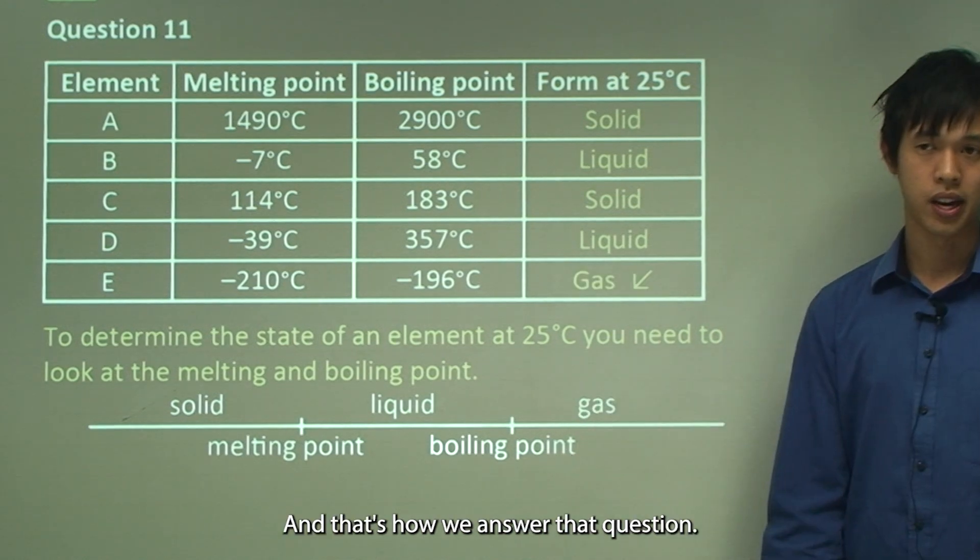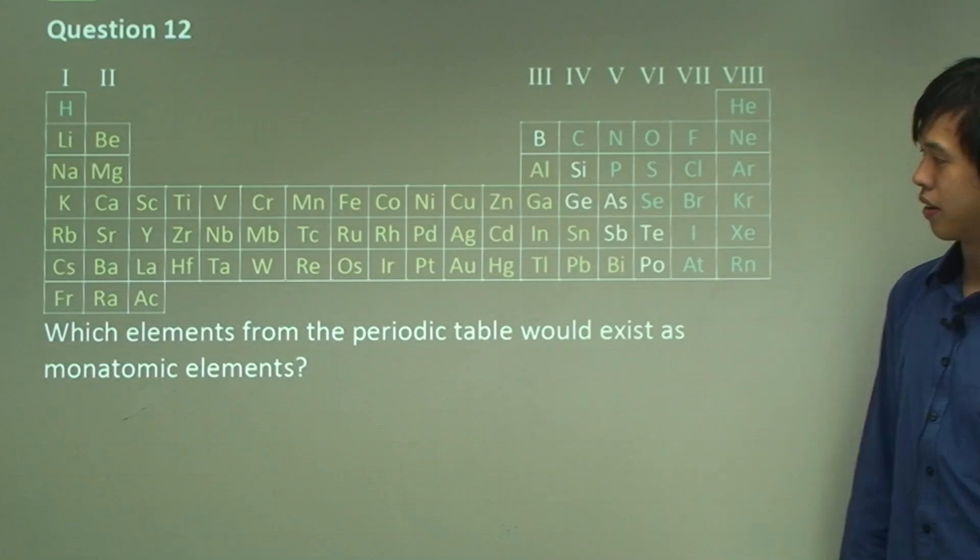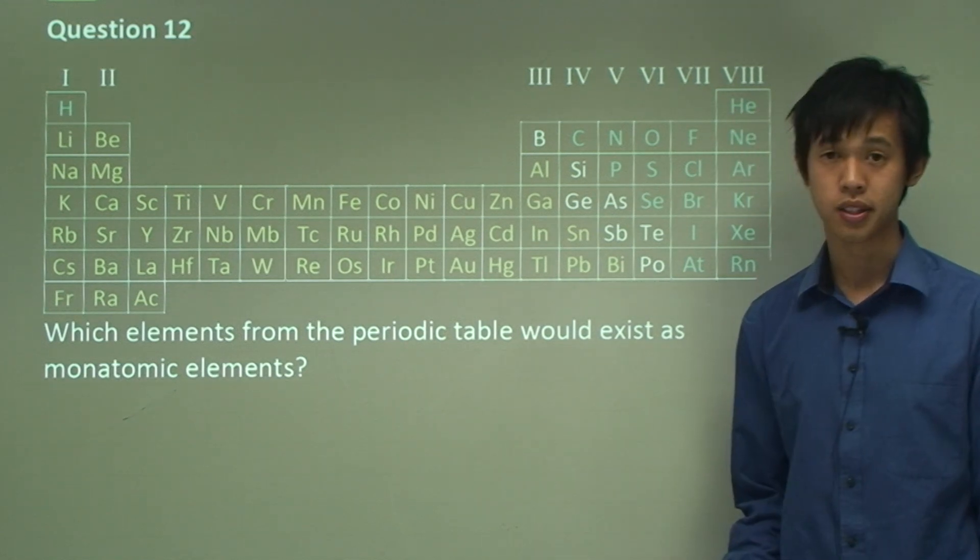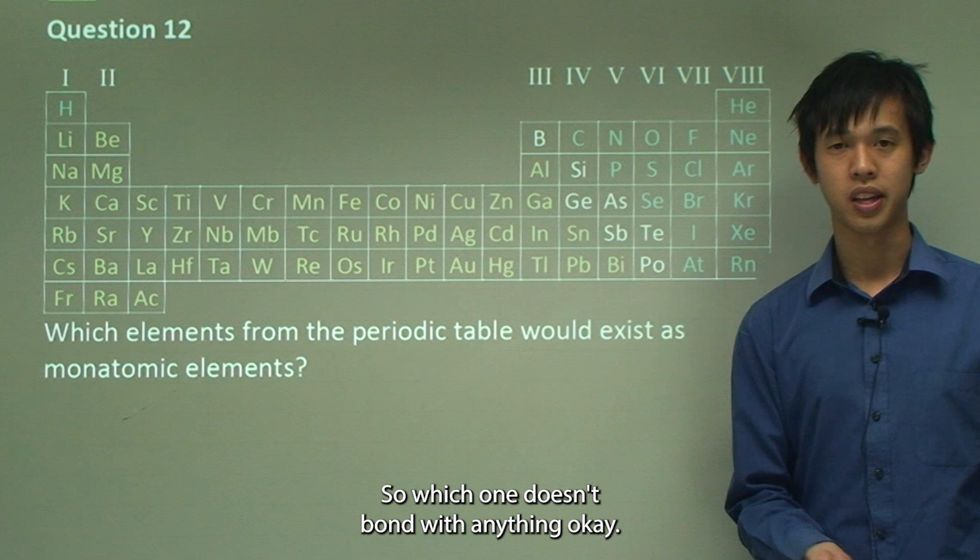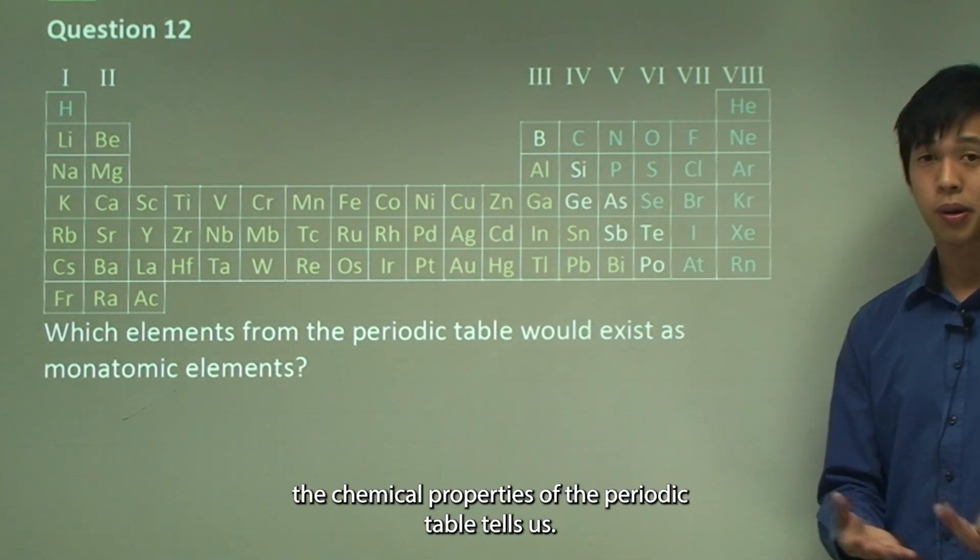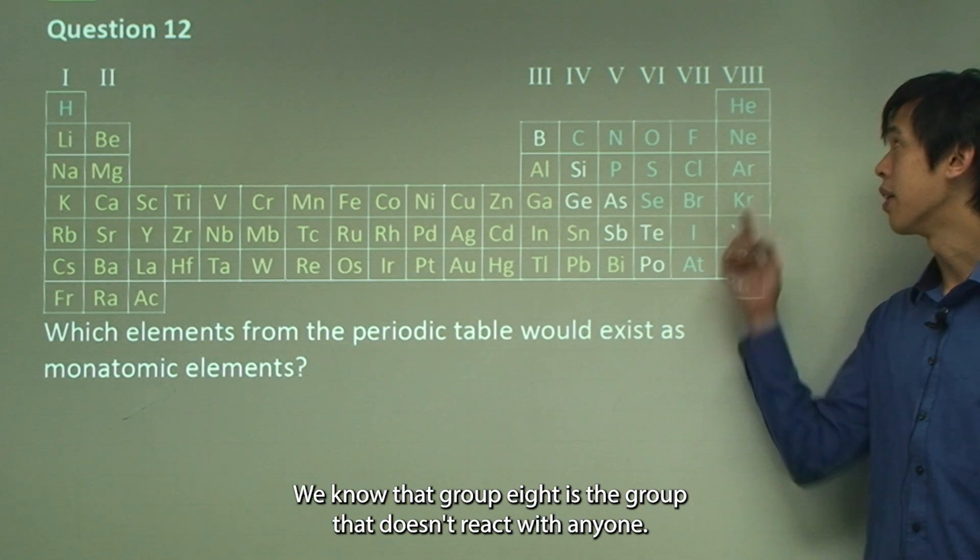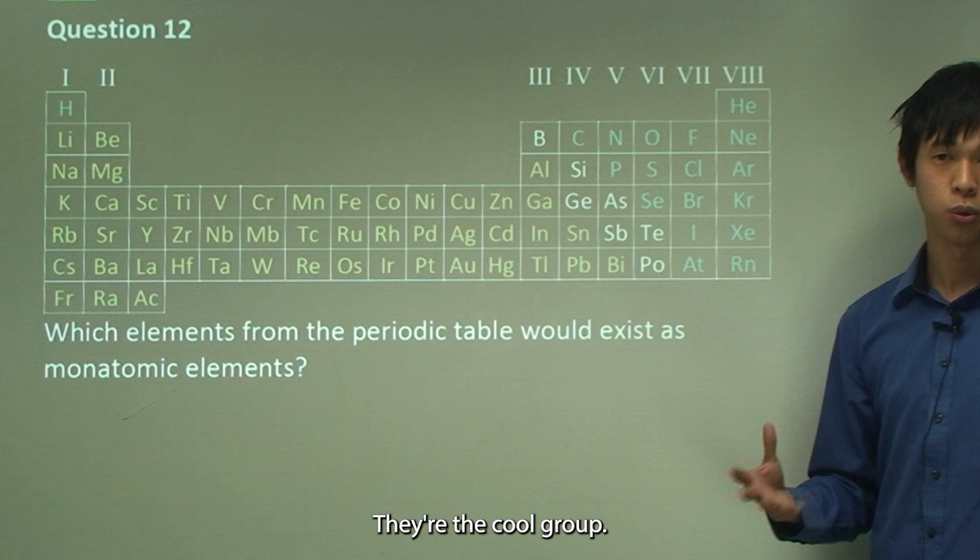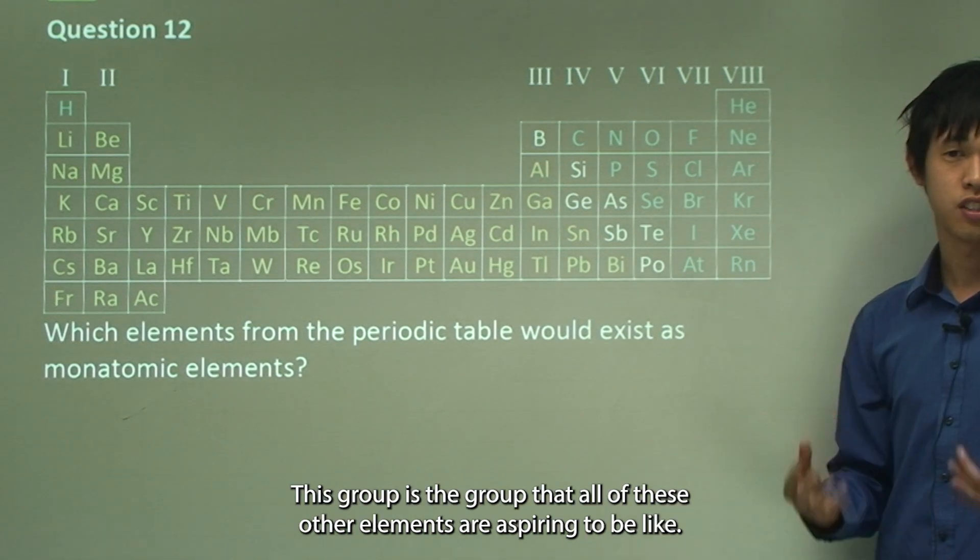Question 12: Which elements from the periodic table would exist as monatomic elements? So which one doesn't bond with anything? Which one's the least reactive? When we look at the periodic table, the chemical properties that the periodic table tells us, we know that group 8 is the group that doesn't react with anyone. They're the cool group, everyone wants to be these guys.